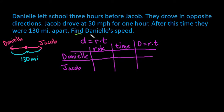We don't know how fast she's going, so that is our unknown. So I'm going to use r for Danielle's speed. Jacob, it tells us that he's traveling at 50 miles per hour.